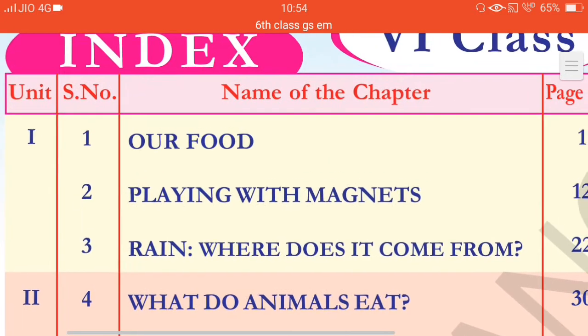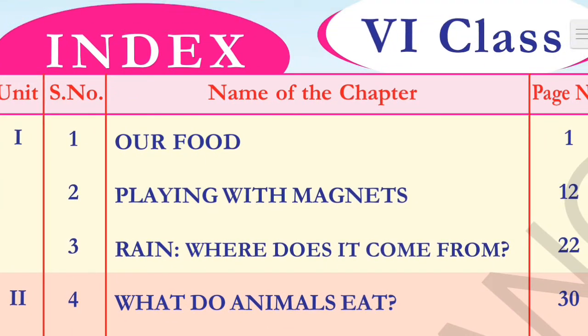Students, we have completed four chapters. Did you remember the names of the chapters? These are the names of the chapters we have completed: First lesson, our food. Second lesson, playing with magnets. Third lesson, rain, where does it come from? Fourth lesson, what do animals eat? We have successfully completed these four chapters and also given a test on these chapters — that's FA 1, Formative Assessment 1.